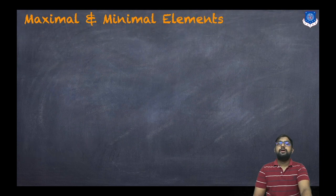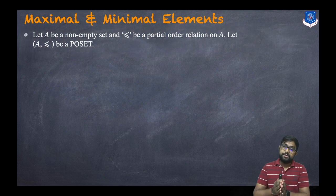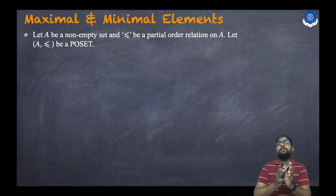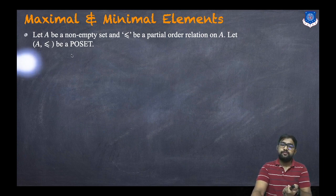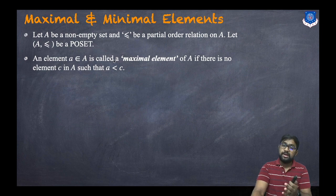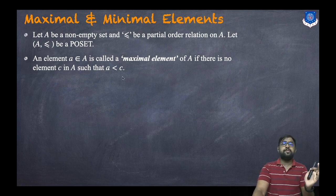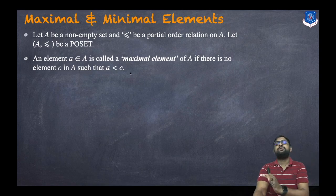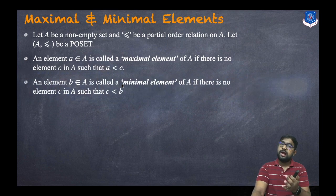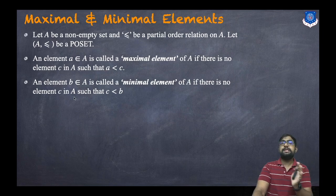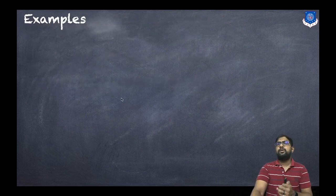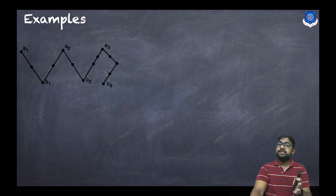Now let us discuss what is a maximal and what is a minimal element. Let A be a non-empty set and ≤ be a partial order relation on A — let (A, ≤) be a poset. An element a ∈ A is called a maximal element of A if there is no other element c in A such that a < c. An element b ∈ A is called a minimal element of A if there is no element c in A such that c < b.